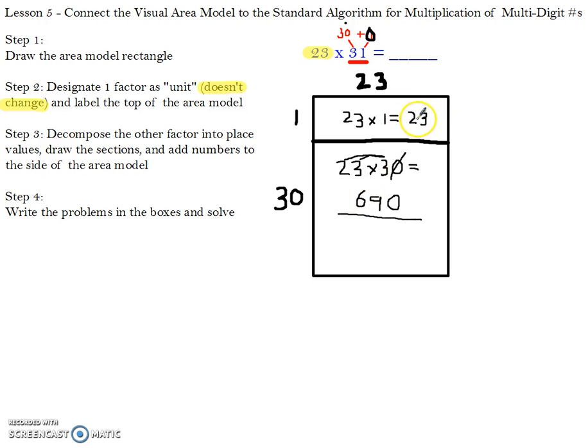So my top box is equal to 23 and my bottom box is equal to 690. The final step 5 for the area model is to add the box values together to get the answer. So my first box value is 23 and my bottom box value is 690. Now when you're setting up your problems, you want to make sure that you're lining up those place values. It's very important to keep it straight and make sure you're adding like place value with like place value.